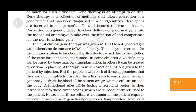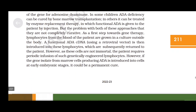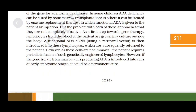The first clinical gene therapy was given in 1990 to a 4-year-old girl with adenosine deaminase, ADA, deficiency. This enzyme is crucial for the immune system to function. The disorder is caused by the deletion of the gene for adenosine deaminase. ADA deficiency can in some children be cured by bone marrow transplantation; in others, it can be treated by enzyme replacement therapy, in which functional ADA is given by injection. As a first step towards gene therapy, lymphocytes from the blood of the patient are grown in culture outside the body, and a functional ADA cDNA using a retroviral vector is then introduced into these lymphocytes.